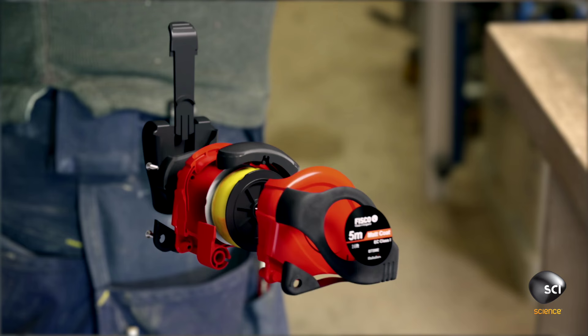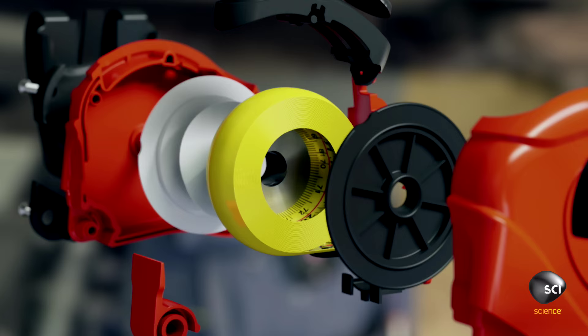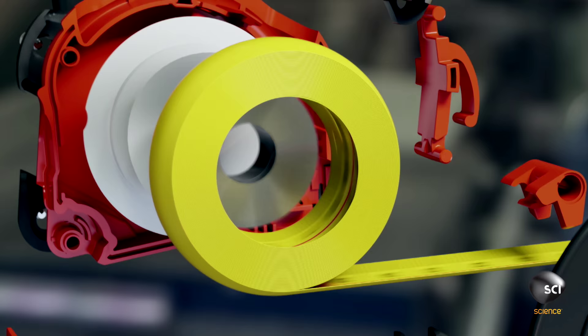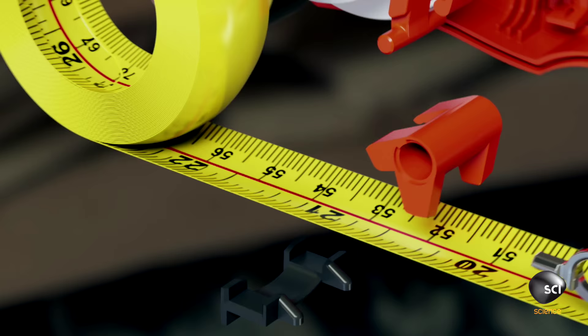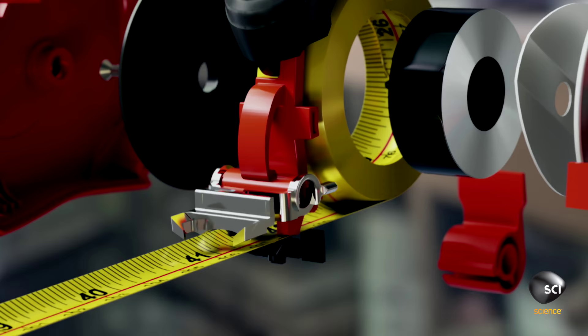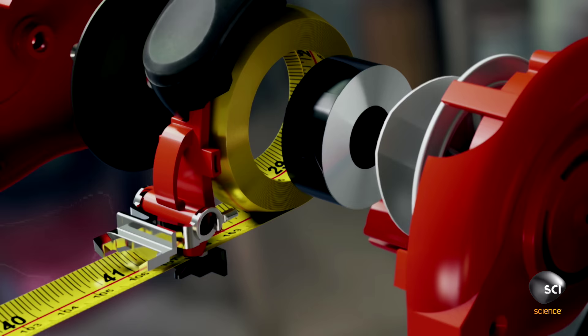Under a toughened plastic case, 26 components work together. A tightly wound metal blade with super-accurate markings, a rocker that can lock the blade without breaking it, and a tightly wound spring that retracts the blade in a fraction of a second.